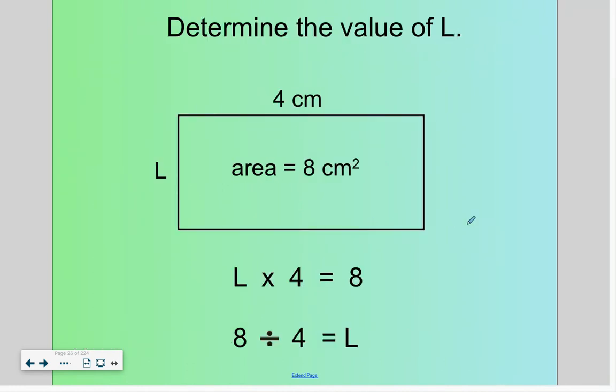What is the value of L in this rectangle? If our total area is eight centimeters squared, then we can use L times four equals eight, or eight divided by four to give us our missing value. L is two centimeters.